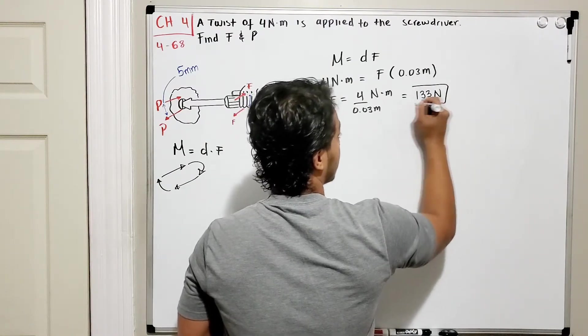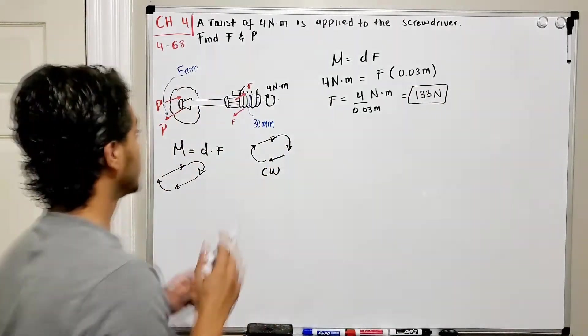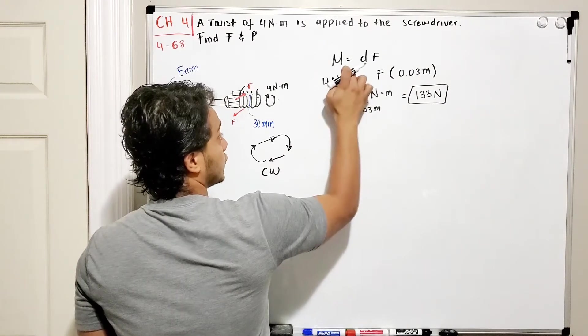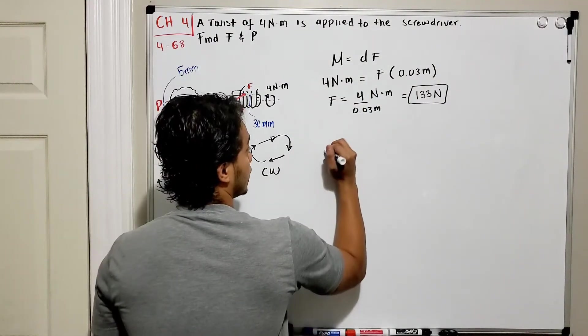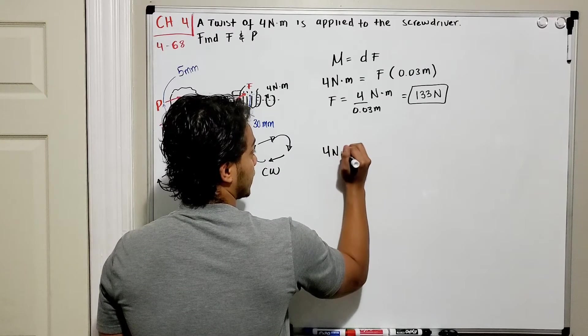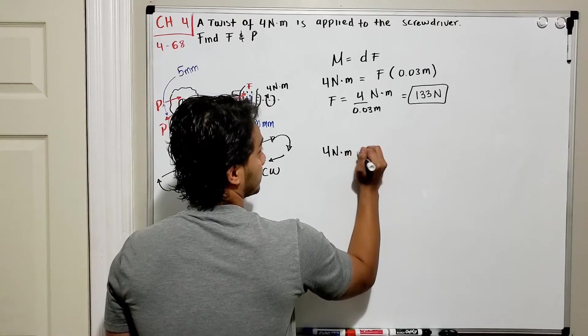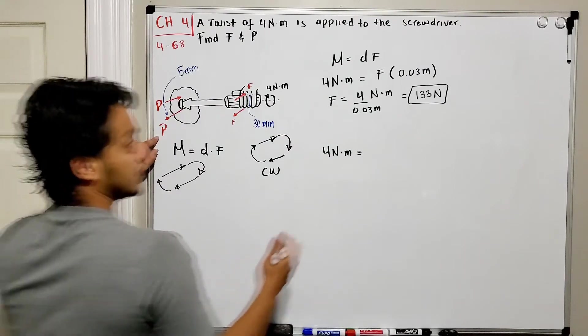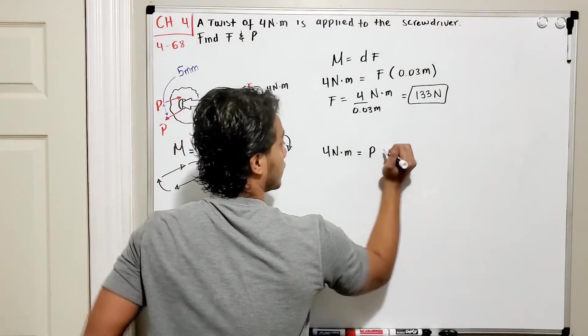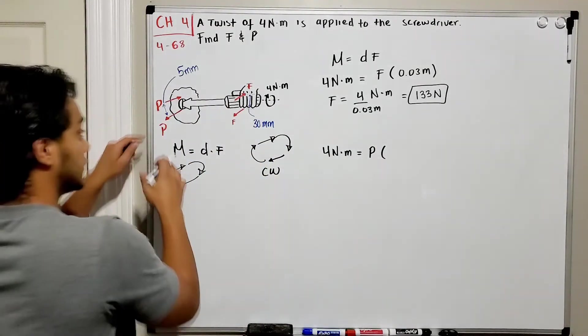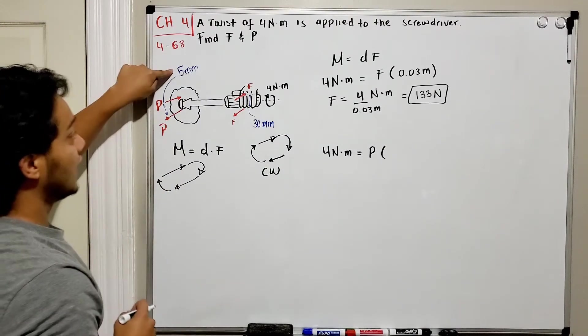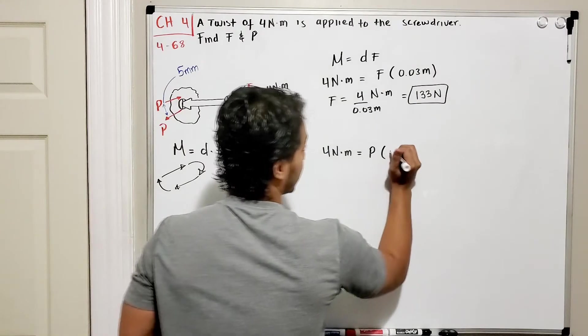And we're going to do the same for our force P. So we have the same moment: 4 newton-meters. It's going to be equal to my force P in this case, multiplied by the distance between the couple forces. So the distance is 5 millimeters, so if I convert that into meters it's going to be 0.005 meters.